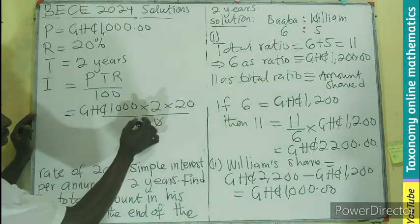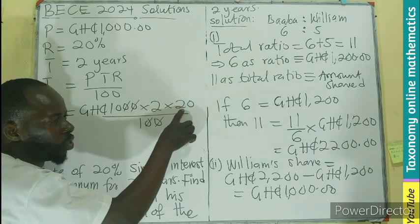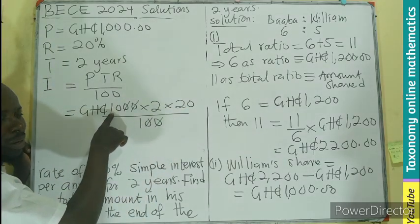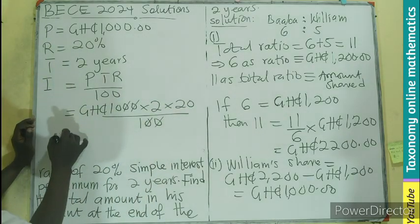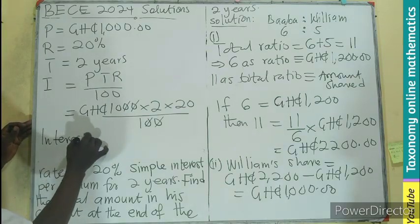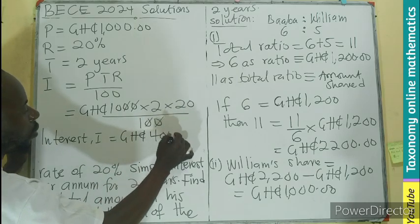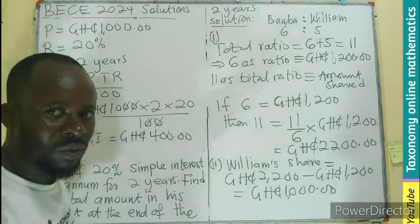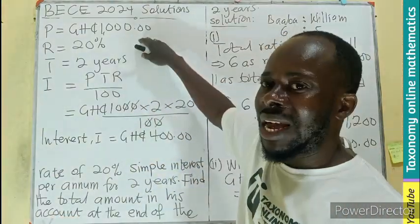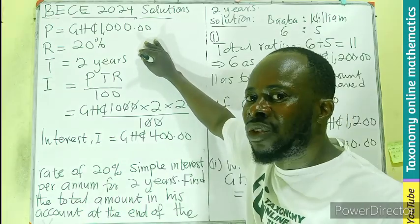The 1,000 and 100 cancel — we lose a zero. So we are left with 2 times 20, which is 40. Then 40 times 10 gives us 400. So the interest I equals 400. After 2 years, the money of 1,000 will accrue an interest of 400.